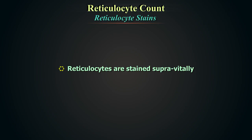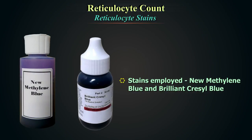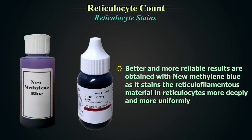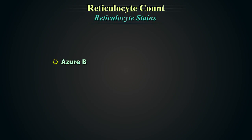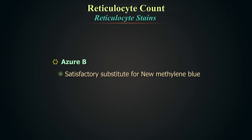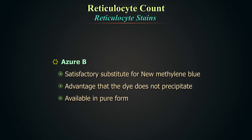Reticulocytes are stained supravitally, meaning the cells are alive while being stained. Therefore, you should not stain a smeared sample. The usual stains employed are new methylene blue, brilliant chrysal blue, and Azure B. New methylene blue gives better and more reliable results than brilliant chrysal blue, as it stains the reticulofilamentous material more deeply and uniformly. Azure B is a satisfactory substitute for new methylene blue, with the advantage that the dye does not precipitate and is available in pure form.